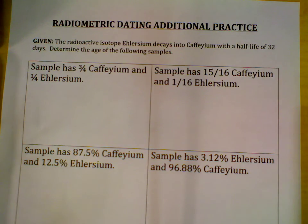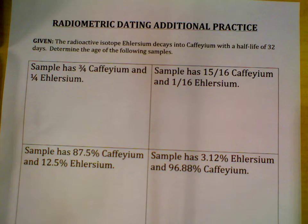This is how we solve radiometric dating problems. I'm going to do the column on the left and then leave you the column on the right. That way you can check and see if you're understanding how to do that, and then bring the right-hand column into your instructors and they'll let you know if you did them right.